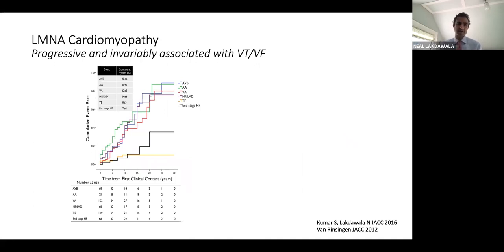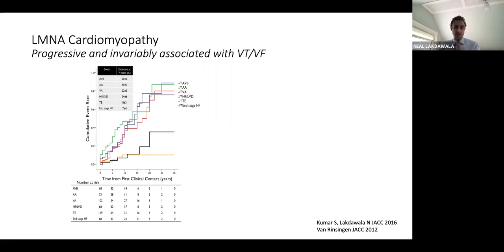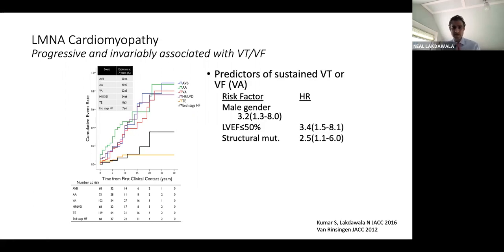The other reason lamin has our attention is the associated burden of ventricular arrhythmias. An incidence curve for different phenotypes amongst individuals who didn't have them at baseline shows that in red — onset of ventricular arrhythmias — if you follow patients long enough, virtually all would go on to develop either sustained VT, ventricular fibrillation, or associated sudden death. Our group and others have identified risk factors for sustained VT or VF in this patient population: male sex, LV systolic dysfunction of really any magnitude, and the type of mutation — a structural non-missense mutation — have been shown to identify patients at risk for sudden death or malignant ventricular arrhythmias.